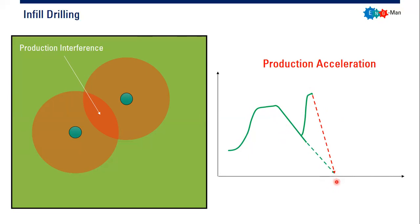Rather than giving us significant reserve addition, infill drilling in this mode only accelerates production. Sometimes we prefer production acceleration — for example, if we want to get more oil and more revenue as early as possible so we can leave the field sooner. Some companies do that: they drill numerous wells and perform infill drilling to accelerate production, and after the field has been depleted they leave and give it back to the government.